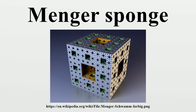In a similar way, the Sierpinski carpet is a universal curve for all curves that can be drawn on the two-dimensional plane. The Menger sponge has infinite surface area but zero volume. The sponge has a Hausdorff dimension of log 20 / log 3.